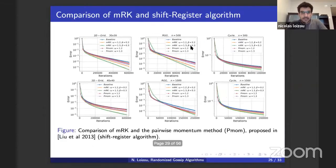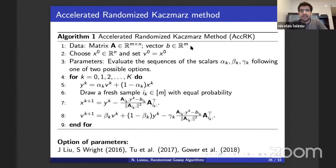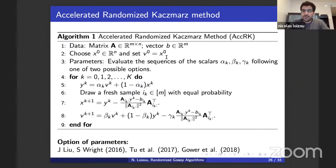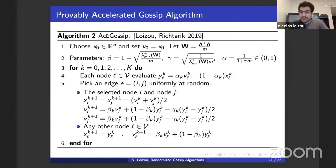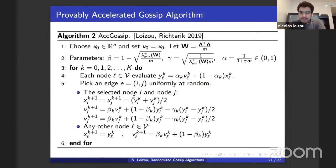Moving to the Nesterov accelerated variant of the gossip algorithm: the setup is still that a pair of nodes communicate and update their values to their average. The key difference in the accelerated version is described in the next part of the talk.